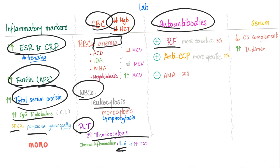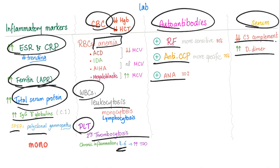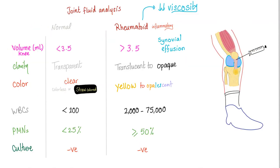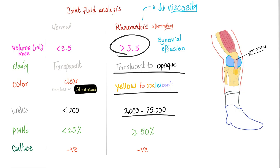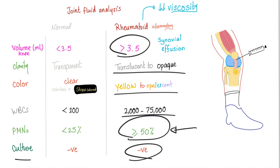Autoantibody results typically show positive RF, positive anti-CCP, and sometimes positive ANA. Serum shows low complement and increased D-dimer, though D-dimer is sensitive but not specific. Joint fluid analysis of a rheumatoid joint shows volume greater than 3.5 mL, translucent to opaque clarity, yellow to opalescent color, white blood cells from 2,000 to 75,000, PMNs greater than 50%, and a negative culture — there is no bacterial infection.